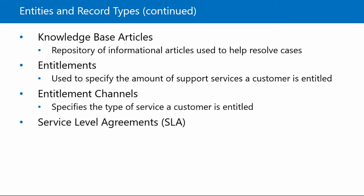And then, of course, we also have service level agreements or SLAs. SLAs define the level of service or support that your organization agrees to offer to a customer. For example, a customer signed a service level agreement stating that all support cases would be resolved within two business days. It is now our responsibility as a company to make sure that that happens. It is also possible to associate an SLA with an entitlement so that when the entitlement is added to the case, the associated SLA is also applied.